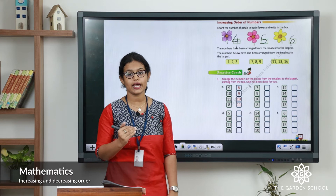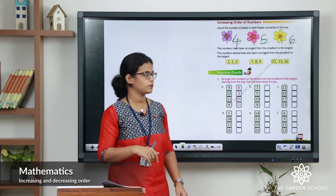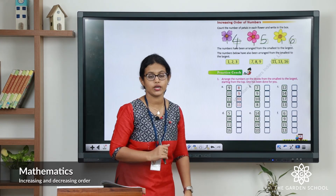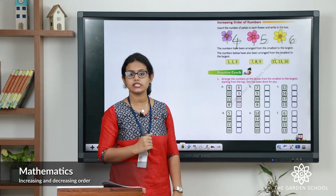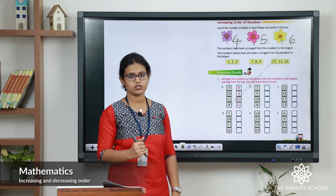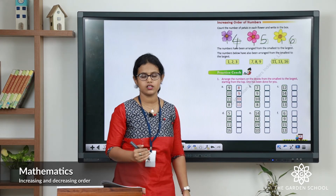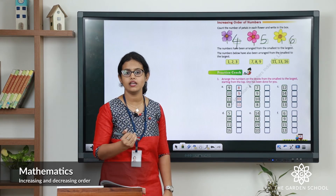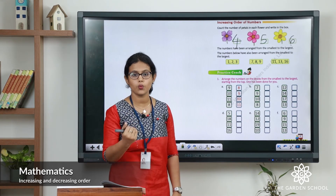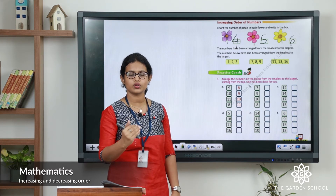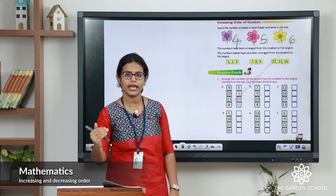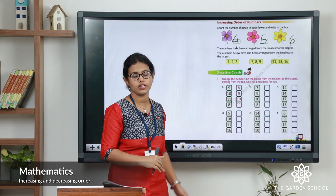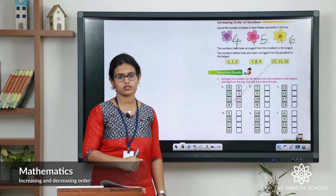Now let's do the exercise. The first question has numbers nine, ten, eleven, eight — you have to arrange them in increasing order. The answer is already done: eight, nine, ten, eleven. When we do forward counting: one, two, three, four, five, six, seven, eight — so eight, nine, ten, eleven in increasing order.